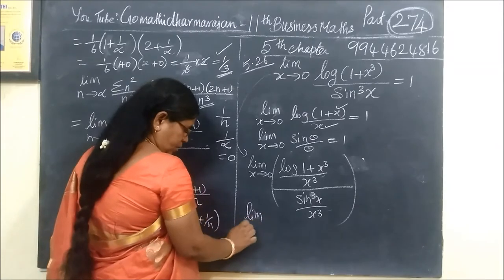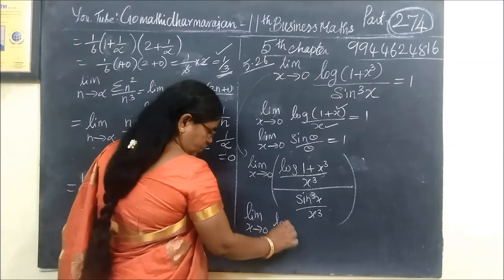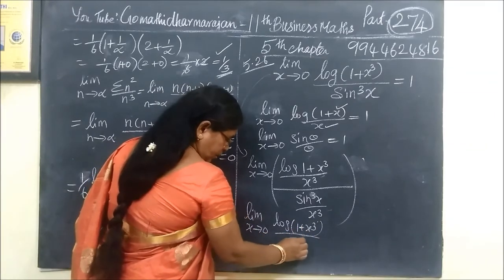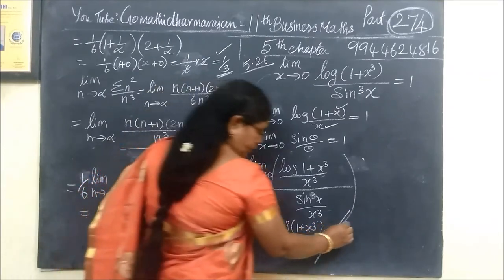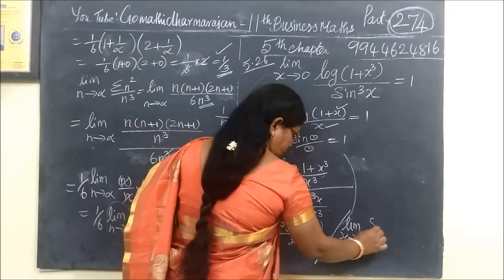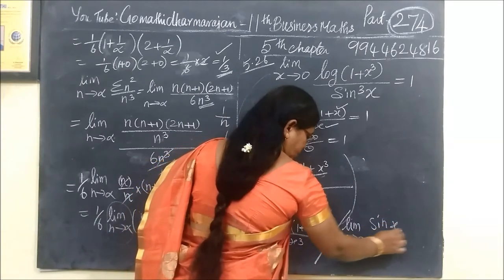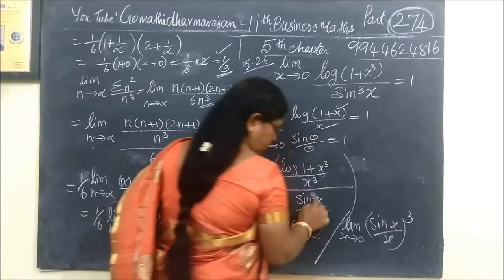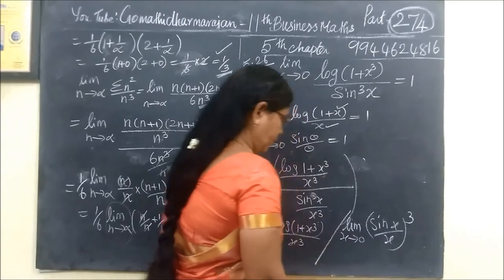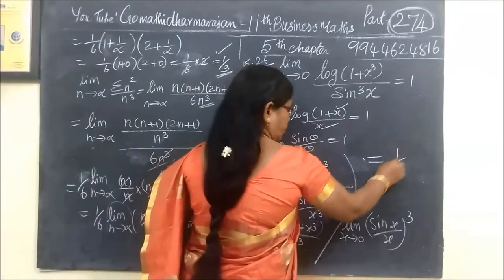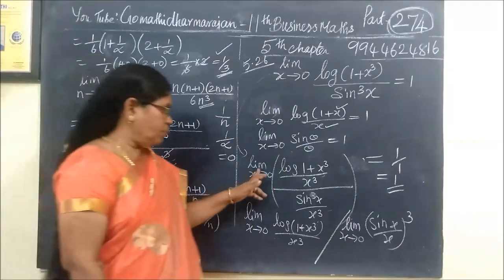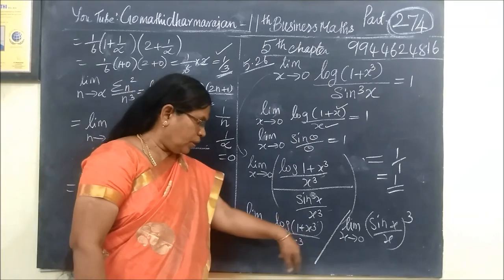This is equal to limit x tends to 0 of log of 1 plus x cubed by x cubed, times limit x tends to 0 of sin x by x whole cubed. Both limits equal 1, so the answer for this one is 1 by 1, which equals 1.